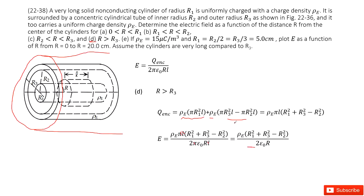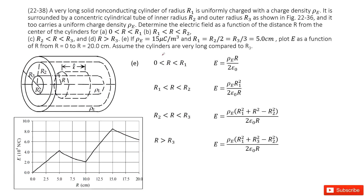Part E gives us the numerical values for the charge density, R1, R2, and R3. We need to plot E as a function of R. We write down the electric field functions for each region, input the given quantities, and draw the plot — you can do this in Excel. Thank you.